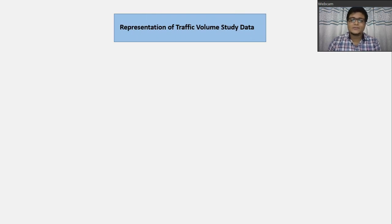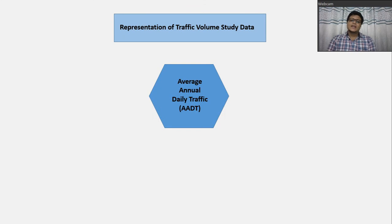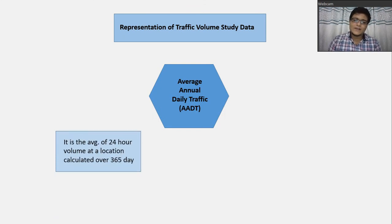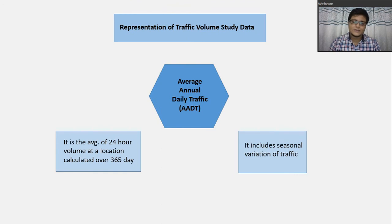Now, regarding the representation of traffic volume study data — there is a term called Average Annual Daily Traffic, or AADT. AADT is the average of 24-hour volume at a location calculated over 365 days, or throughout a year. It includes the seasonal variation of traffic, so if we calculate AADT for a year, we can also observe the seasonal variation of the traffic flow.